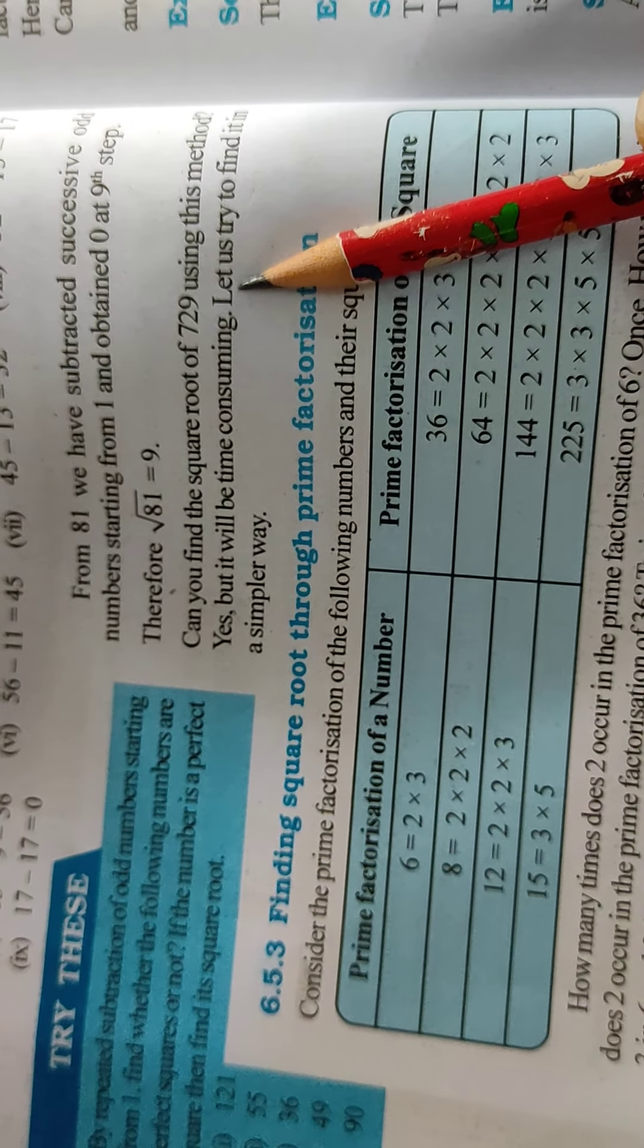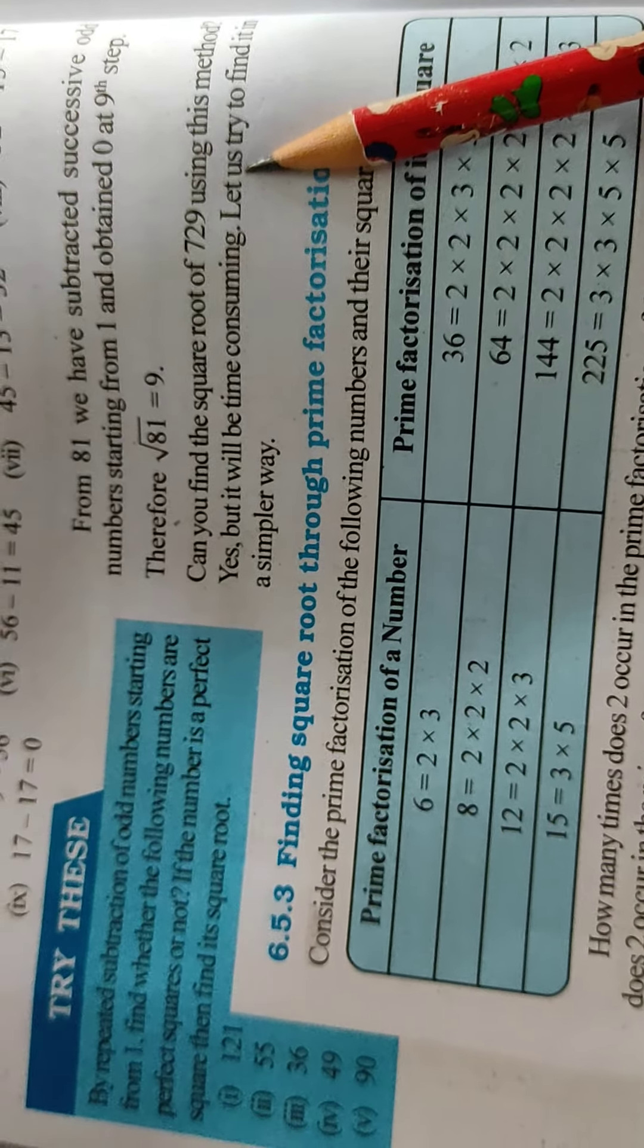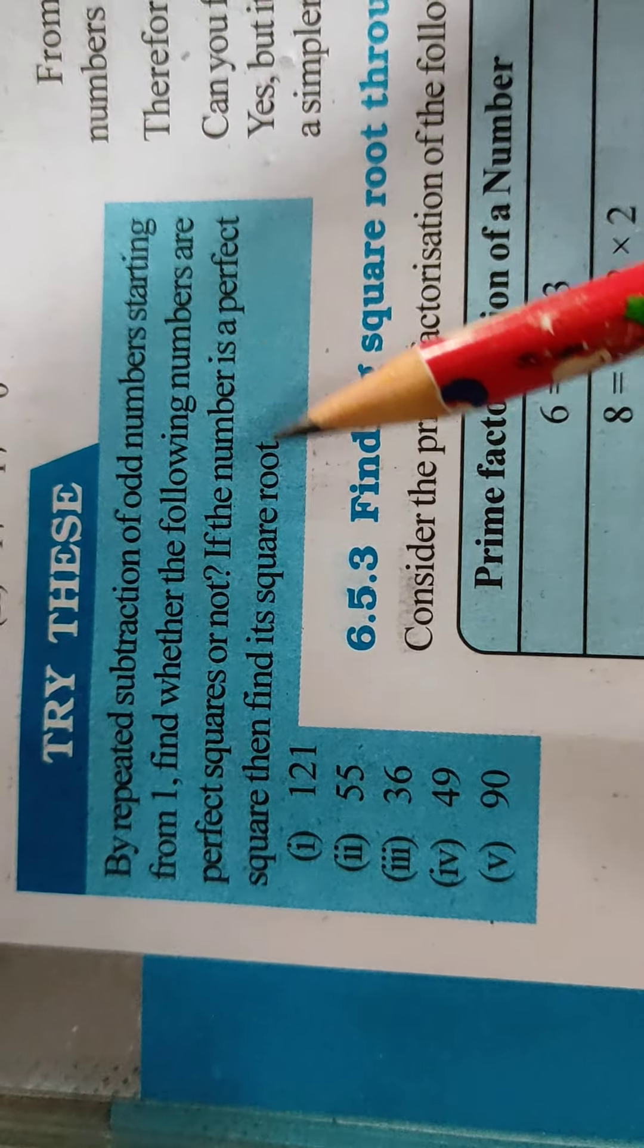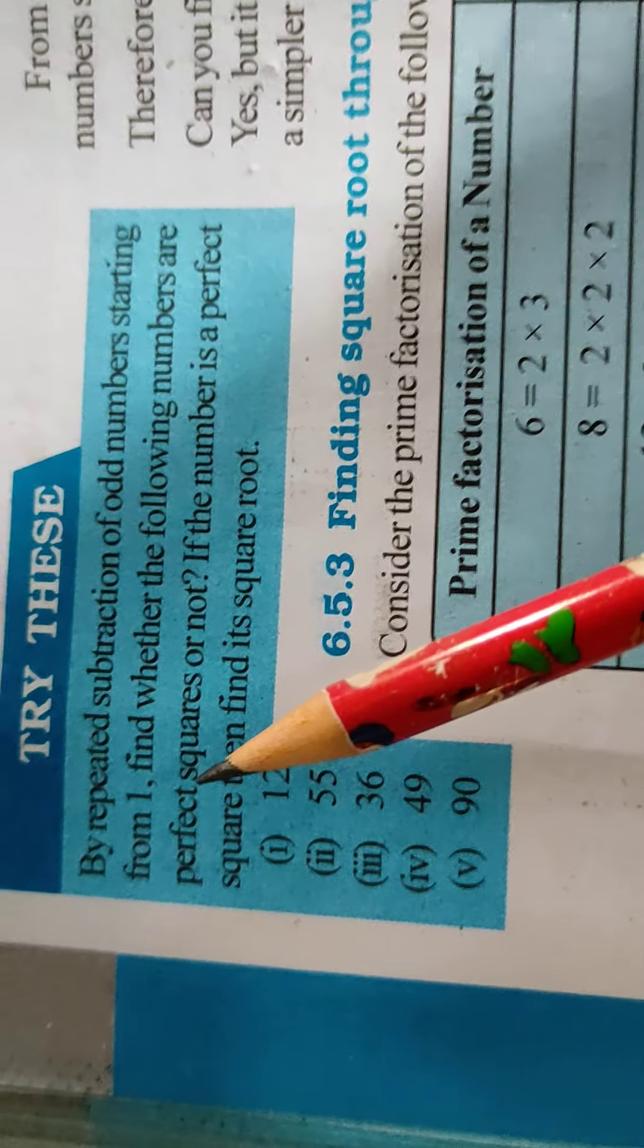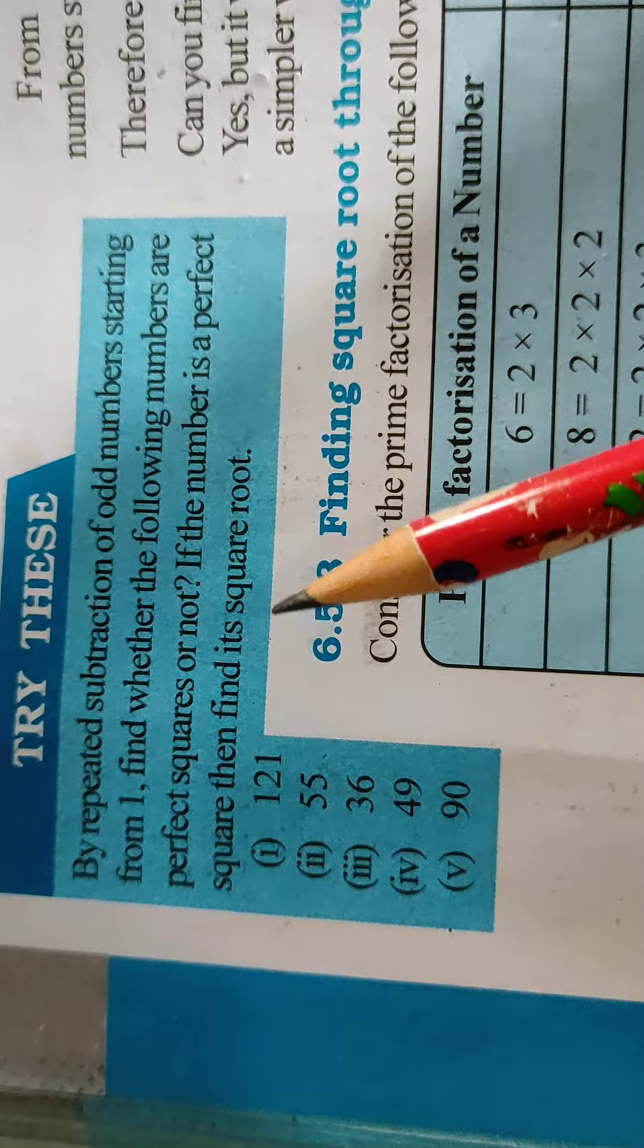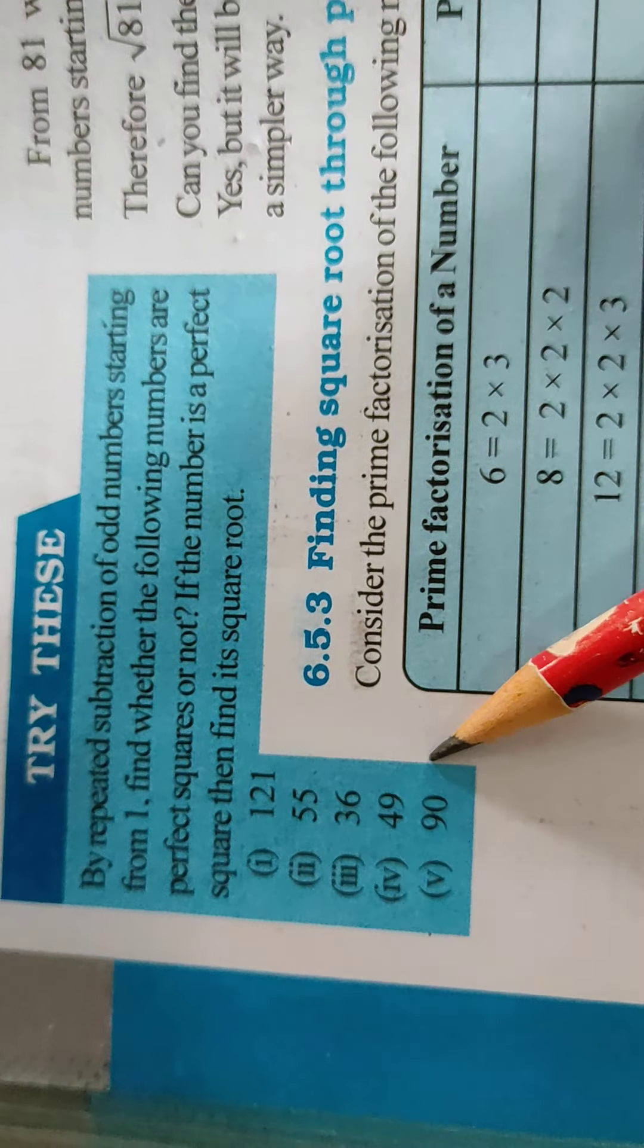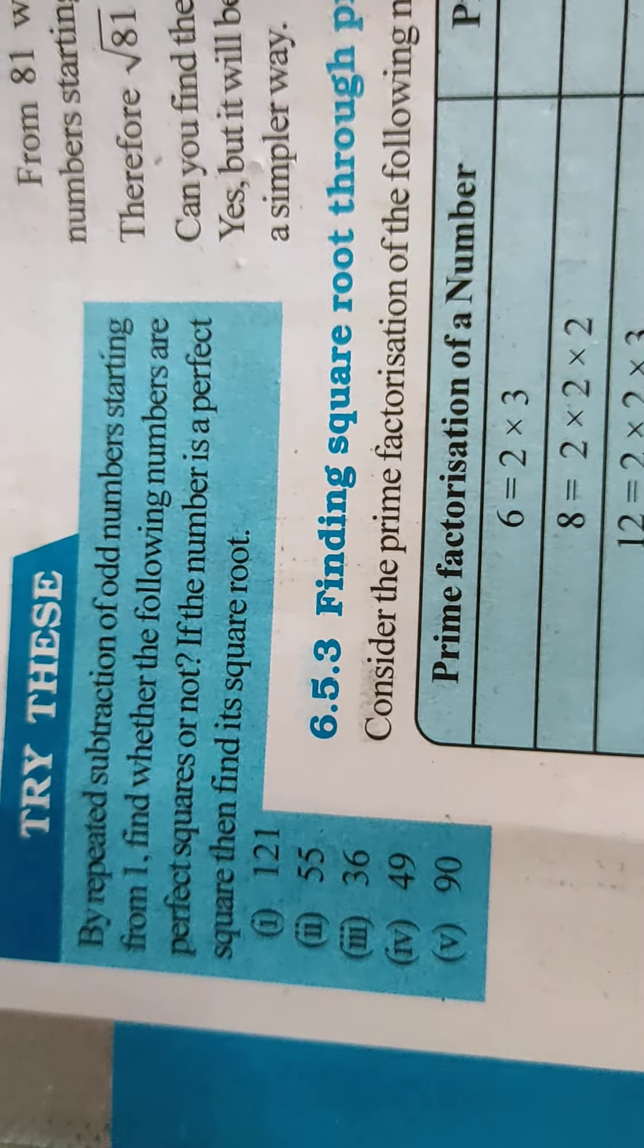So we generally avoid this method. Now see here, by repeated subtraction of odd natural numbers starting from 1, find whether the following numbers are perfect squares or not. If the number is a perfect square, then find its square root. Only first and fifth I will explain, third you will solve yourself in the rough notebook. Okay.